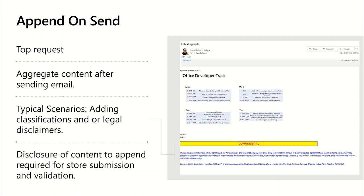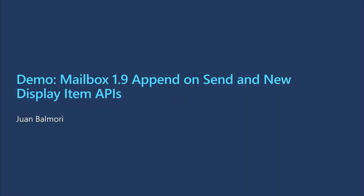When you deploy these types of add-ins to the store, you need to include in the description a full disclosure of the content you're adding — this will be validated and rejected if not complied with. Also, when you create an add-in using these APIs, you must declare it in the manifest. Let's take a closer look at how Append on Send works, and I'll also show you a bit about ScriptLab for Outlook.